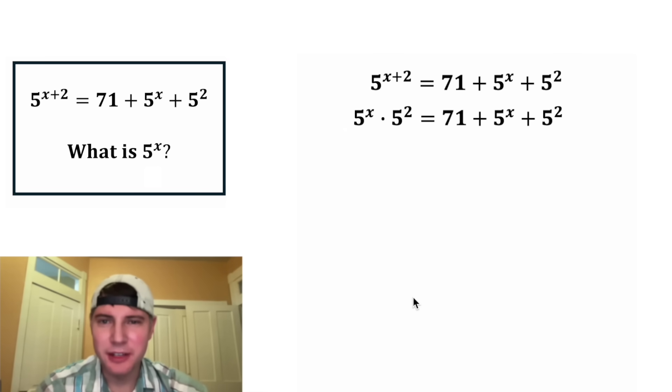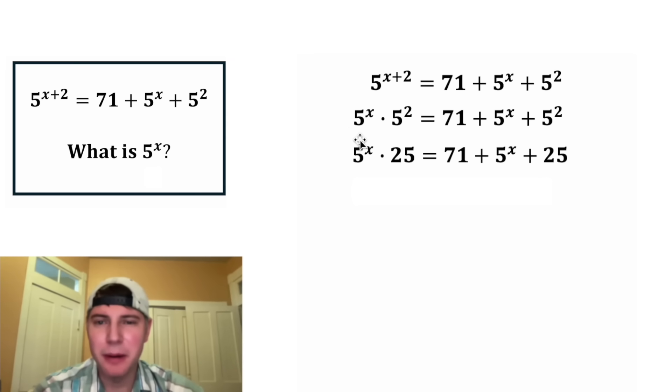Next, this 5 squared is equal to 25, and this 5 squared is also equal to 25. And then let's copy down everything else. On the left-hand side, this 5 to the power of x times 25 can be thought of as 25 5 to the power of x's. And then on the right-hand side, the 71 plus 25 can combine to give us 96, and this 5 to the power of x can be thought of as 1 5 to the power of x.